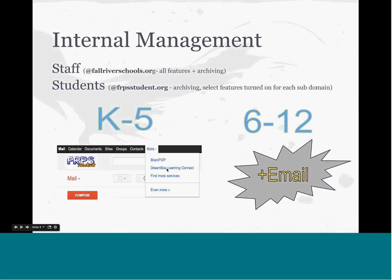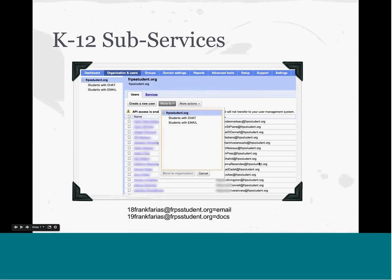For grades 6-12, we have the same features and just add email. It's really neat because it allows students to keep a digital portfolio — from fifth grade they add to sixth grade, and they have all the documents they've worked on. We enable email by domain: frpsstudent.org is the K-5 subdomain with no email. We send email accounts with a year of graduation starting the username — for instance, 19FrankFarias. When a student moves to the next year, we just add them to the group with email enabled.